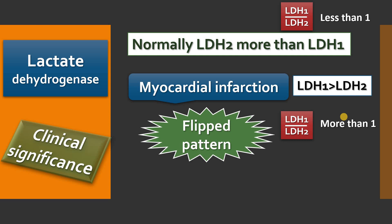In myocardial infarction, this enzyme elevation starts after 18 to 24 hours, the peak level is reached after 2 to 3 days, and it remains in circulation for about 6 days. That is why this is not an early marker and is a marker for many disorders. Nowadays LDH is not used for diagnosis of myocardial infarction, but you should know the flipped pattern in the context of LDH and myocardial infarction.